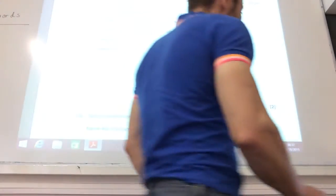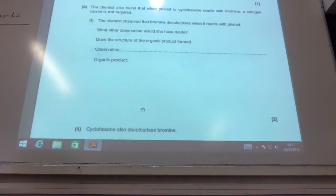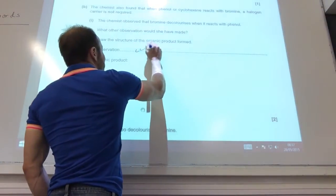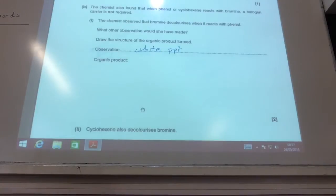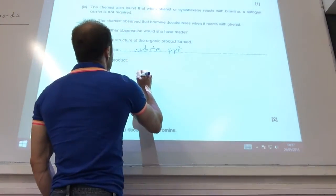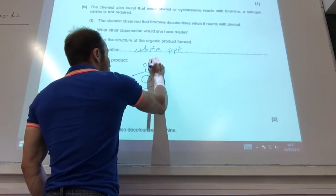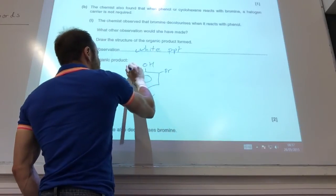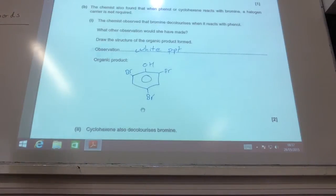Next one, the chemist found out that when phenol reacts with bromine, halogen carrier required, bromine decolorizes. One other observation would be observed - you'd also see a white precipitate, that is a test for phenol. Draw the structure of the organic product formed. It's going to be phenol, and then you actually substitute three bromines onto the benzene ring. So 2,4,6-tribromophenol.